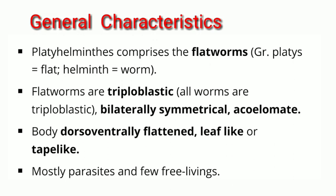As we discussed, Porifera and Cnidaria are diploblastic, whereas Platyhelminthes are triploblastic. The body is bilaterally symmetrical and they are acoelomate, meaning the coelom is absent. The body is dorso-ventrally flattened with a leaf-like or tape-like shape. They are mostly parasitic and few are free-living.